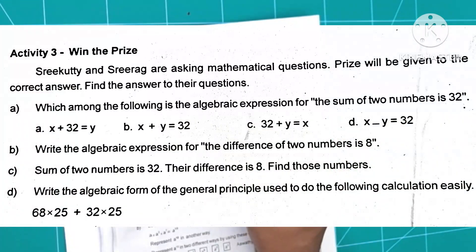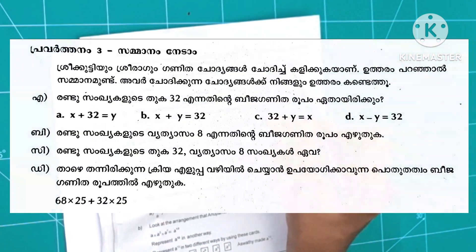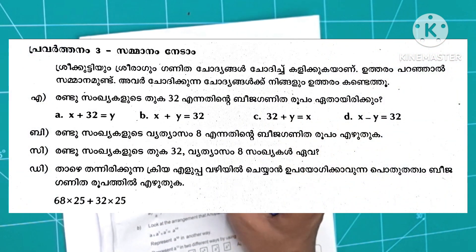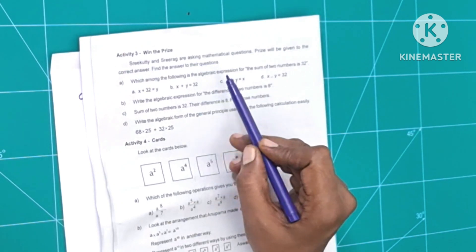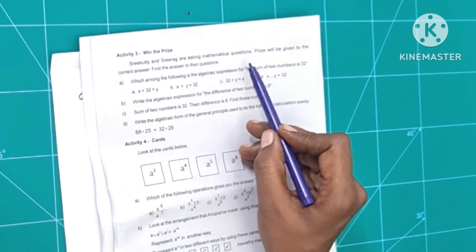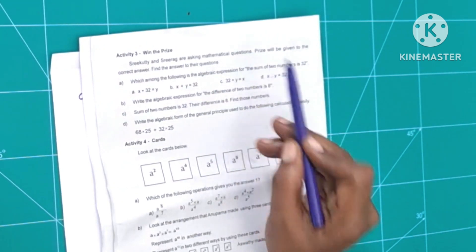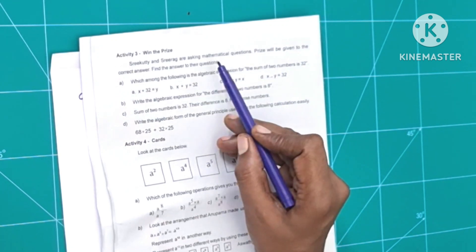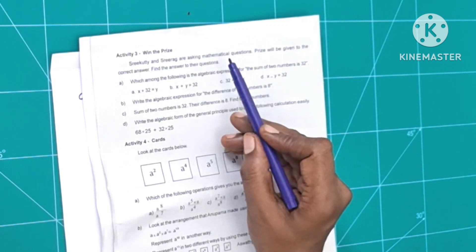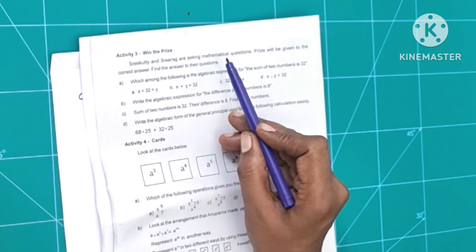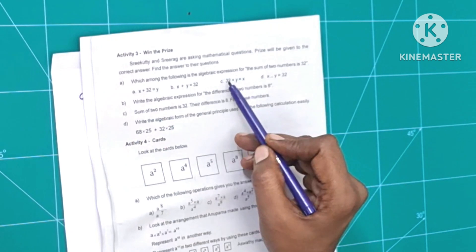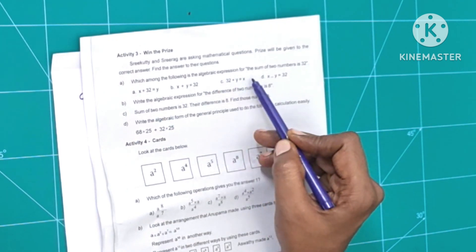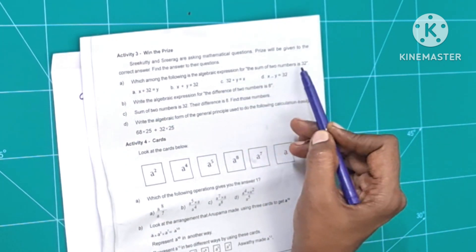Activity 3. Shri Kuti and Shri Daga are asking mathematical questions. A price will be given to the correct answer. Find the answer to their questions. Which among the following is the algebraic expression for: the sum of two numbers is 32?